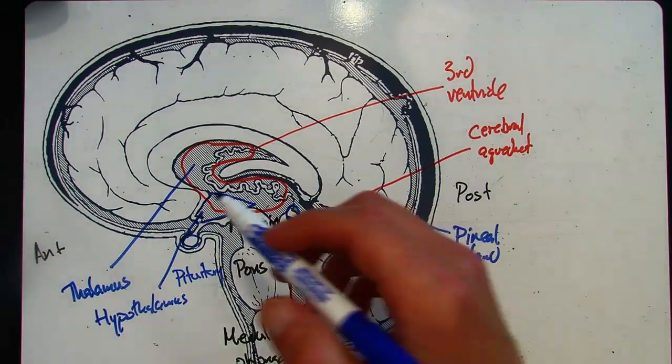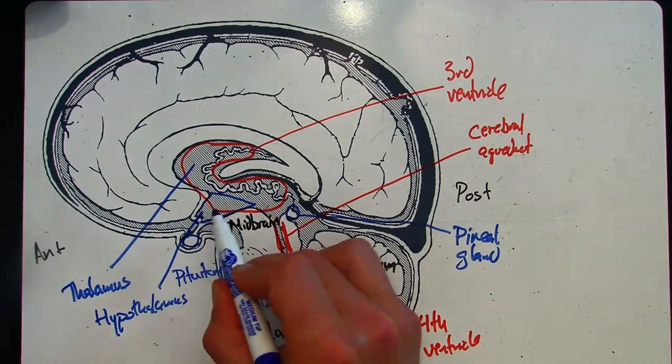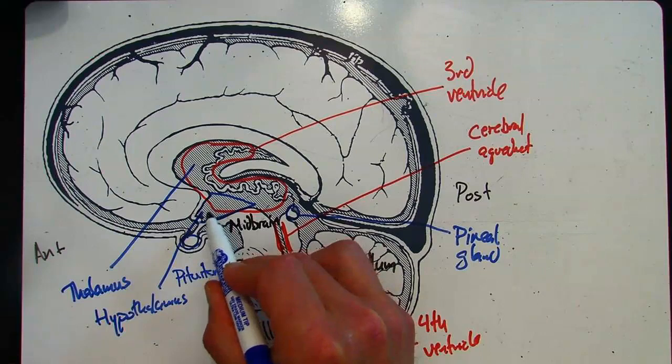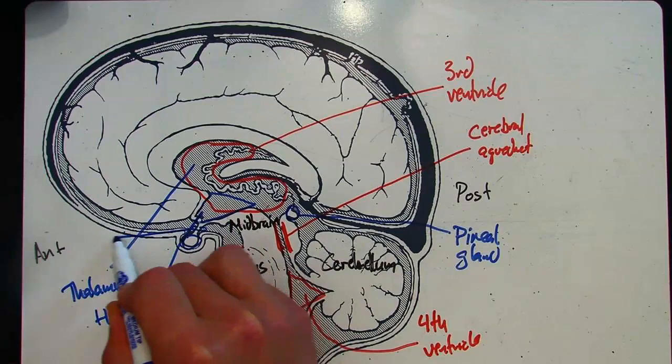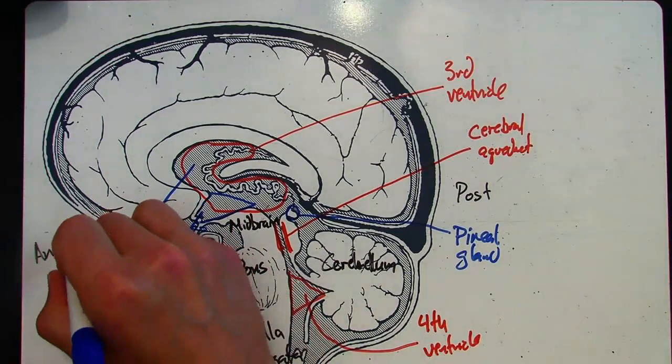Now here, connecting the hypothalamus to the pituitary is this little stalk. This little stalk is called the infundibulum.